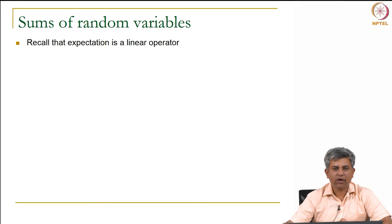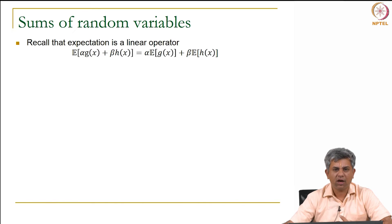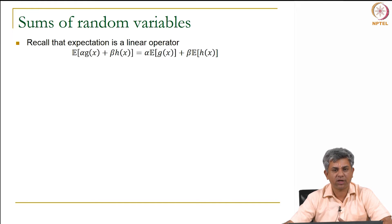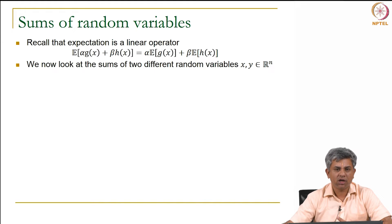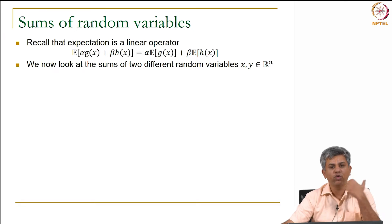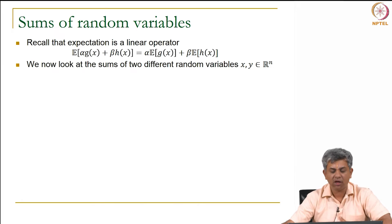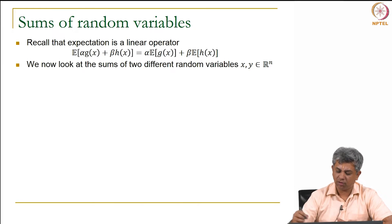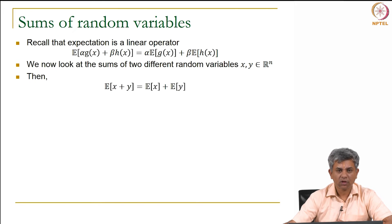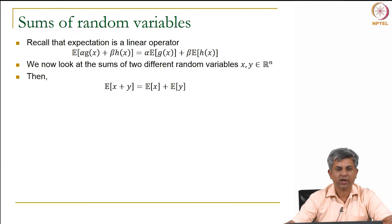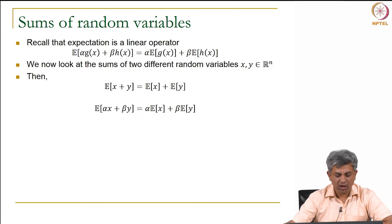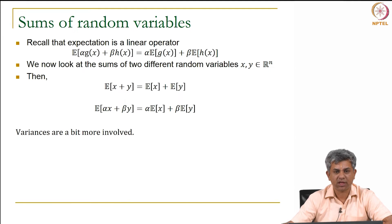Another idea we are going to look at is the sums of two random variables. Remember that expectation is a linear operator, so expectation of alpha G plus beta H equals alpha times expectation of G plus beta times expectation of H. Now extending this to two random vectors X and Y, both of size N×1: expectation of X plus Y is simply expectation of X plus expectation of Y. Similarly, expectation of alpha X plus beta Y equals alpha times expectation of X plus beta times expectation of Y.